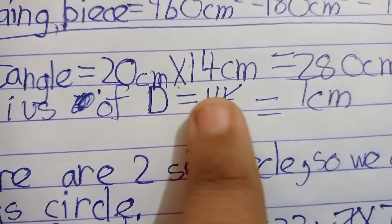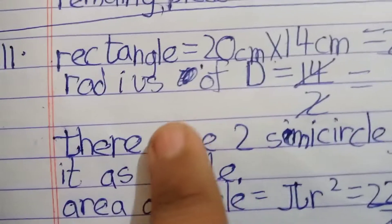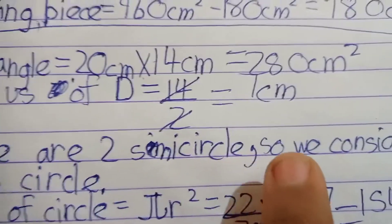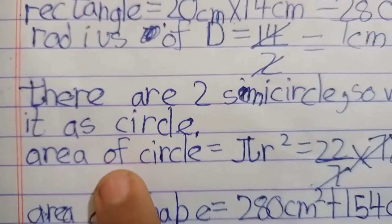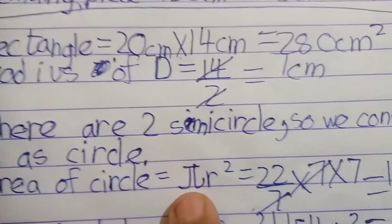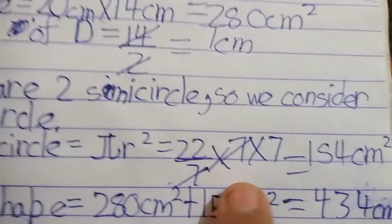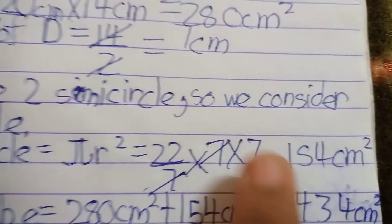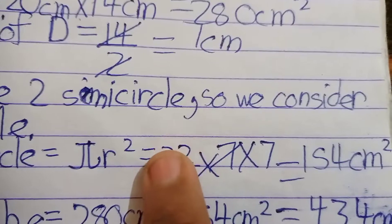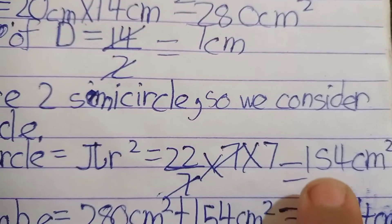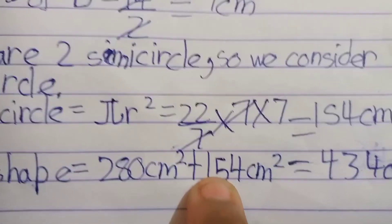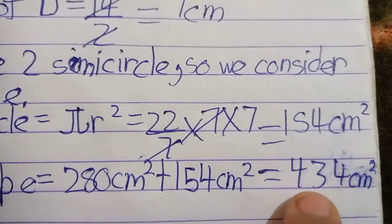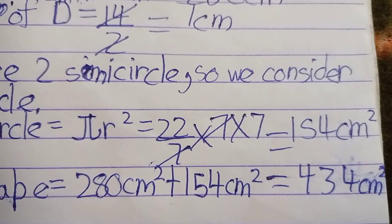Area of rectangle is 20 multiplied by 14 which is 280 cm square. The radius of the semicircle is 14 over 2 which is 7 cm. The two semicircles form one full circle, so area equals π r squared which is 22 over 7 multiplied by 7 multiplied by 7, equals 154 cm square. Total area of the shape is 280 plus 154 which is 434 cm square.